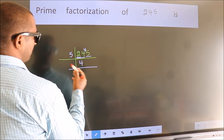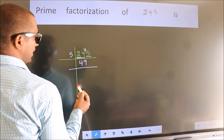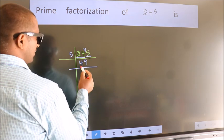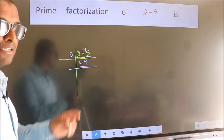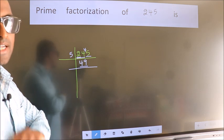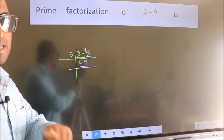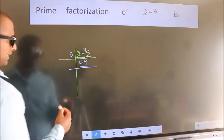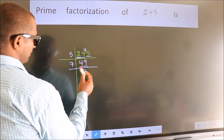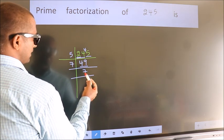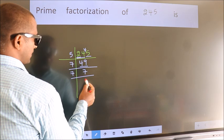Now we have 49. Always remember 7 into 7 is 49. 7 times 7 is 49, that is 7 sevens 49. Now we have 7. 7 is a prime number, so 7 times 1 is 7.